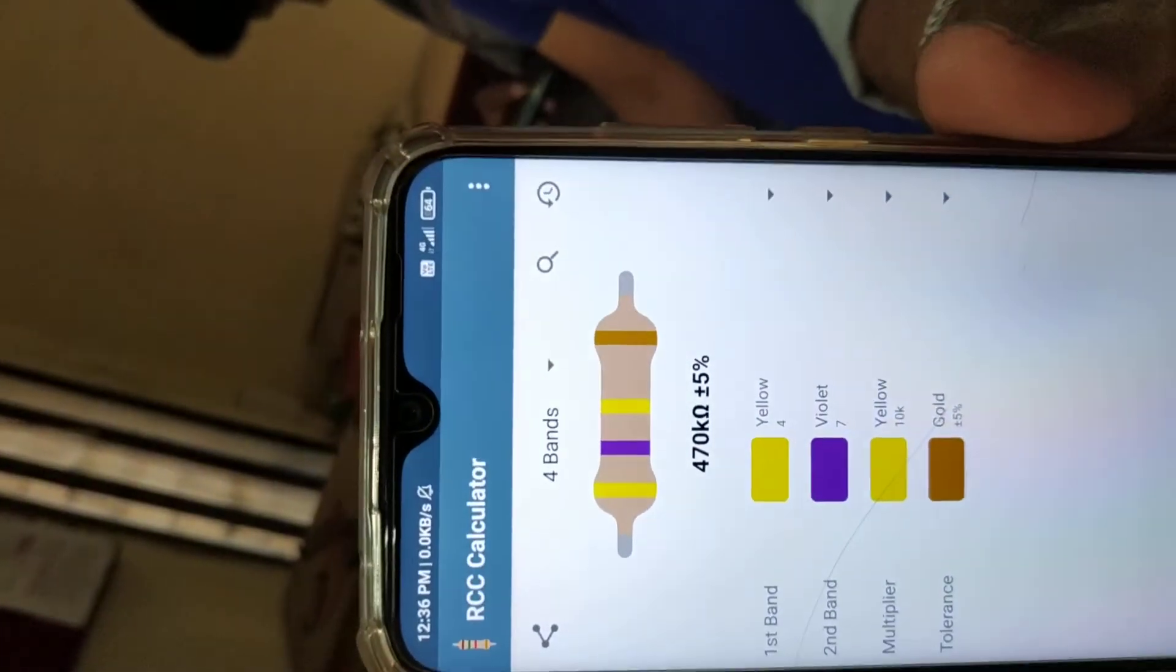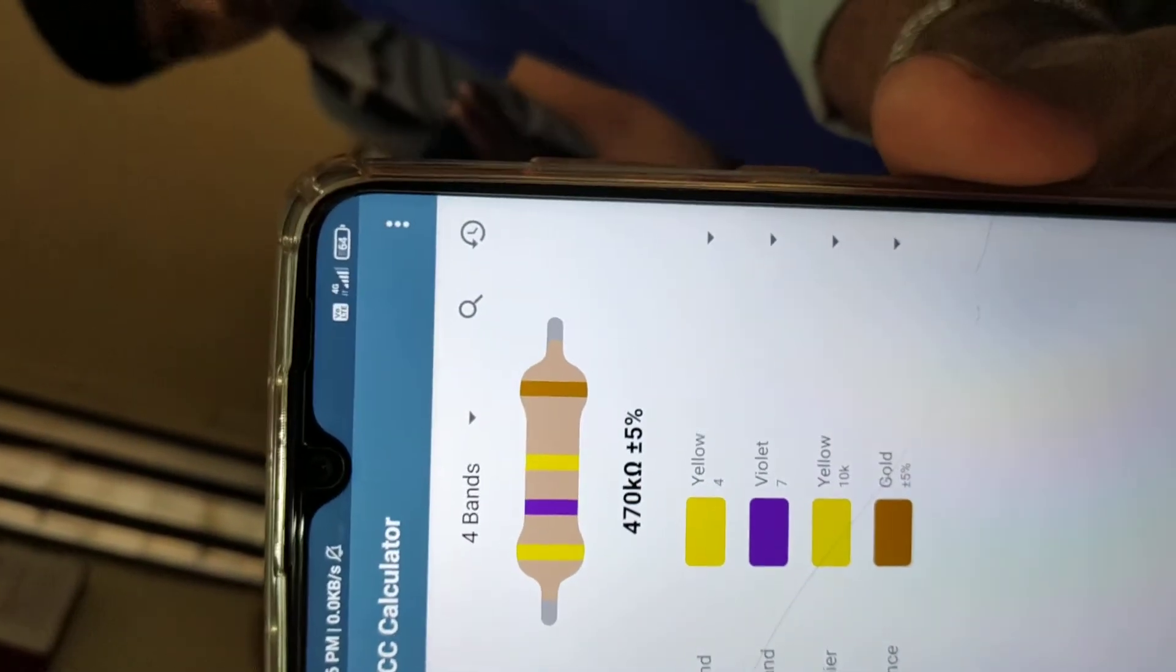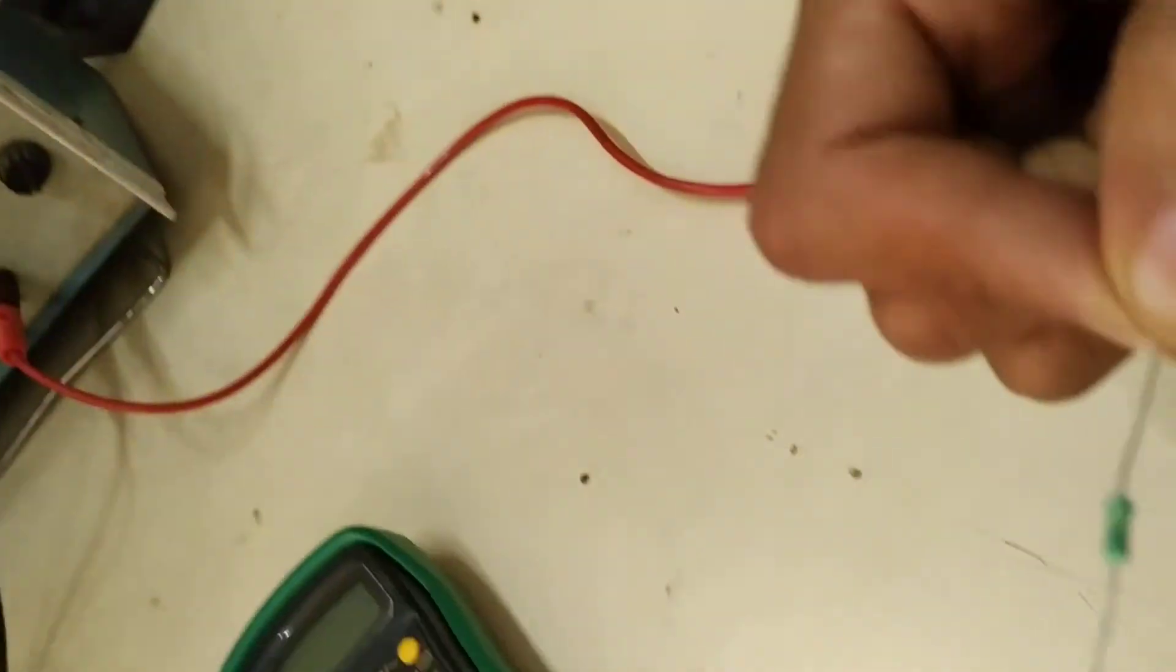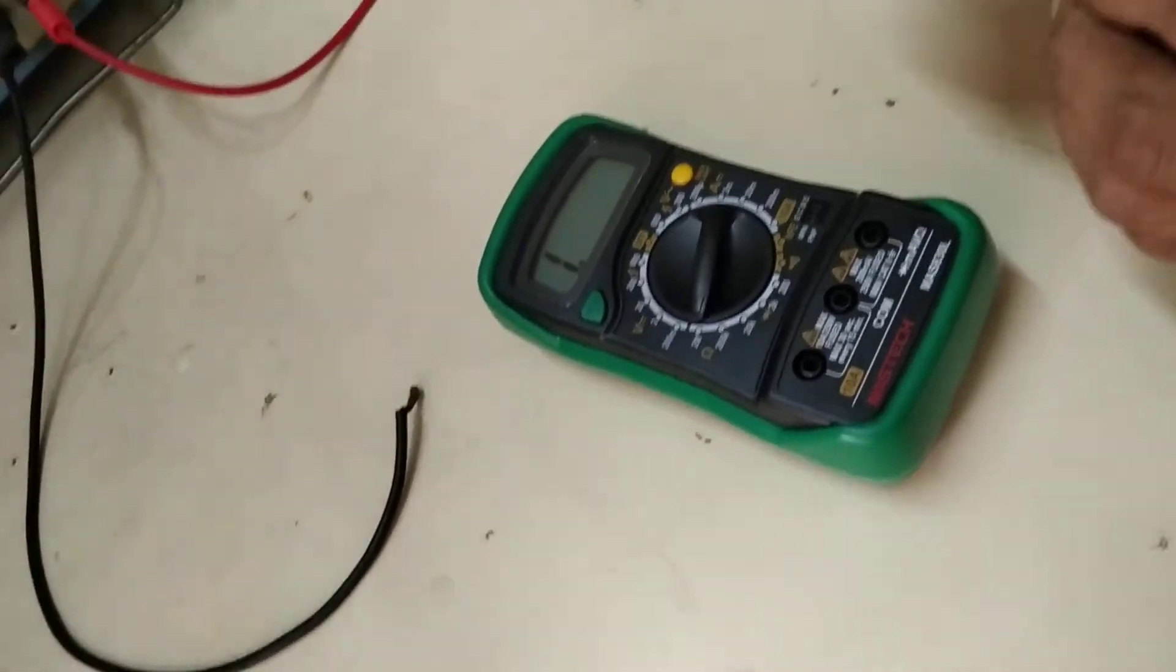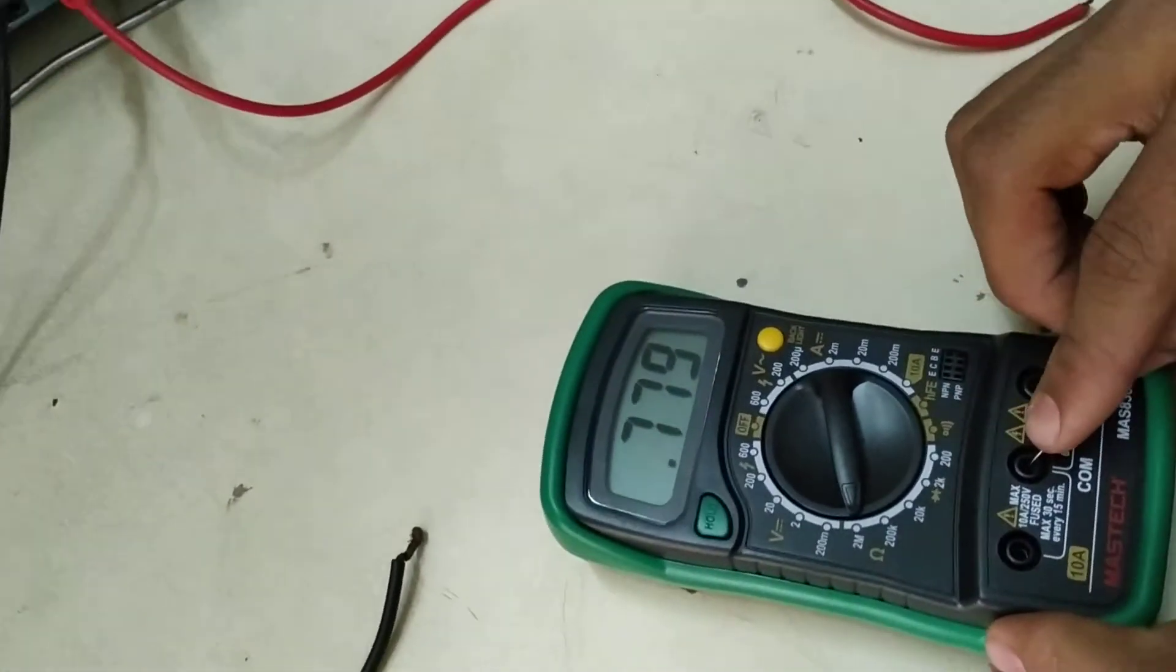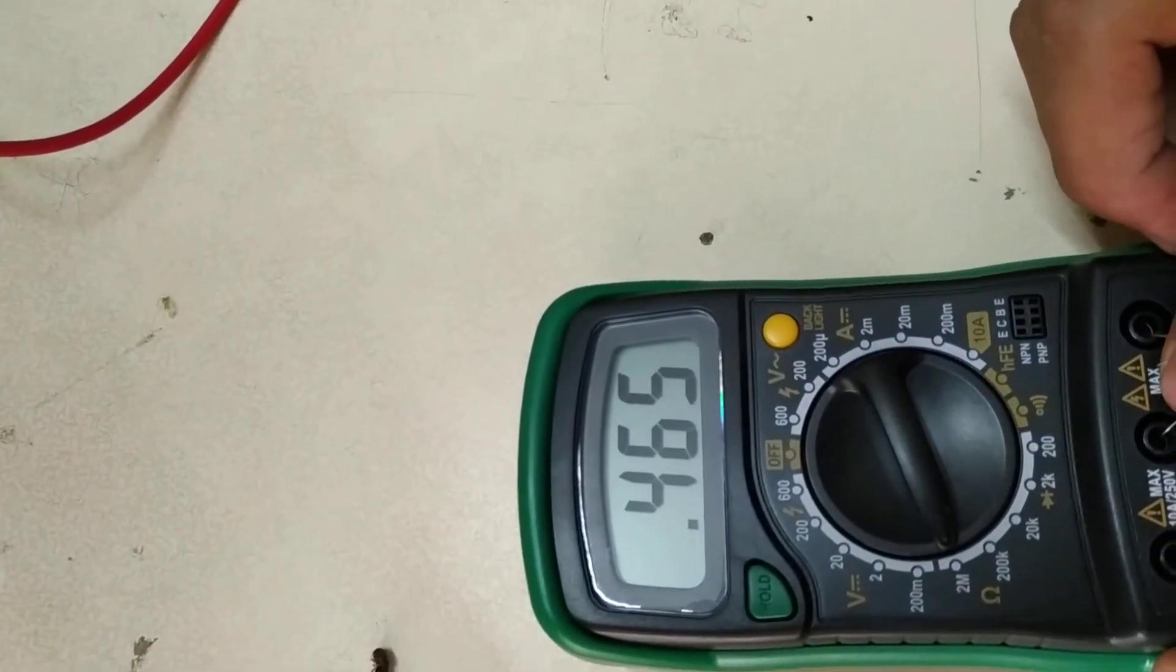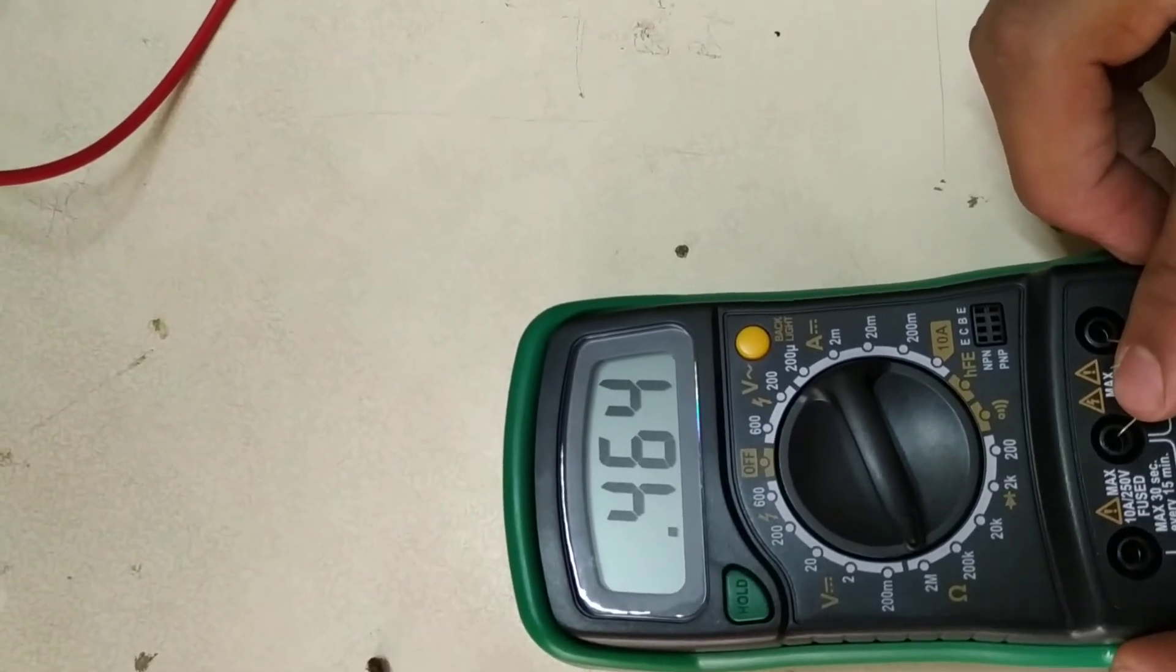The color code is yellow, violet, yellow, and gold, which gives us 470 kOhm from the color code itself. We will measure using a digital multimeter. From the color code, that is the true value. The measured value using digital multimeter, with the range set to 2 megaohms, is 464 kOhm.